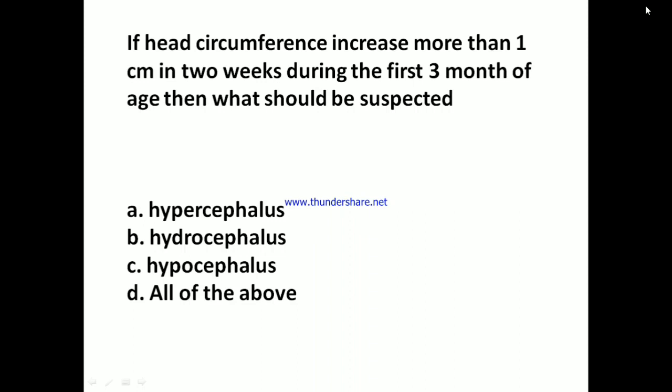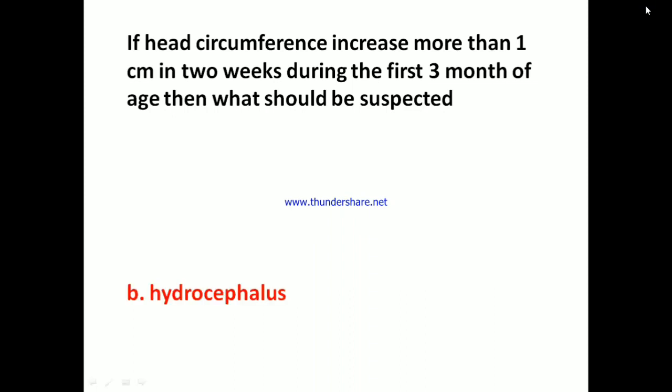If head circumference increases more than 1 cm in 2 weeks during the first 3 months of age, then what should be suspected? A: Hypercephalus, B: Hydrocephalus, C: Hypocephalus, D: All of the above. The answer is B: Hydrocephalus.